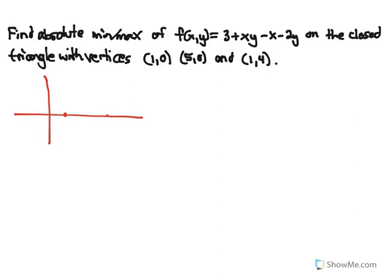Our first vertex is at (1, 0), second one's at (5, 0), and the other one's at (1, 4). So that's just a simple triangle. How do we find absolute max and mins? We have to test critical points — where the first partial derivatives in terms of x and in terms of y are 0 — and then we also have to test the boundaries of our region.